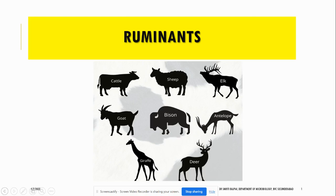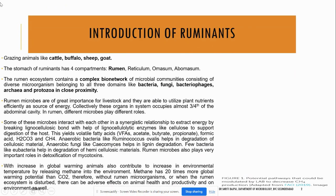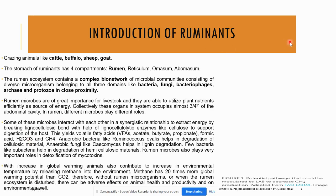Ruminants are the grazing animals. The stomach of the ruminants has four compartments: rumen, omasum, abomasum, and reticulum. On the basis of the name of the rumen, they are called ruminants.